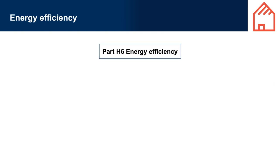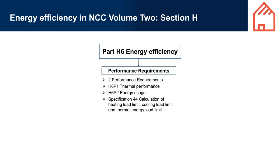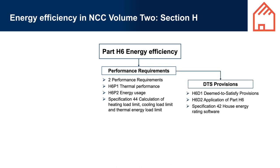Energy Efficiency in NCC Volume 2 Section H. The two performance requirements in Part H6 of NCC Volume 2 reflect the key concerns for energy efficiency. H6 P1 Thermal Performance relates to the building's ability to maintain a comfortable internal temperature for occupants while using as little energy as possible. By achieving good thermal performance, the building will meet objectives to improve occupant health and amenity. H6 P2 Energy Usage aims to reduce energy consumption, energy peak demand, and greenhouse gas emissions. The DTS provisions in Part H6 also reflect these key objectives.